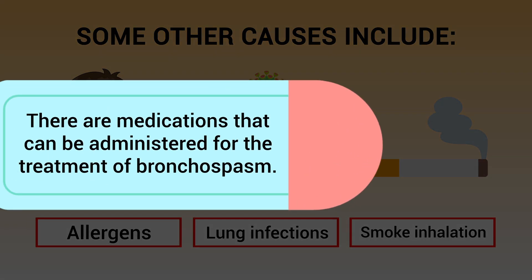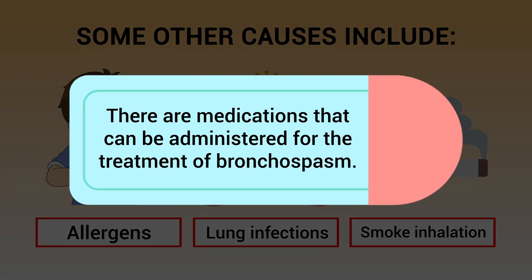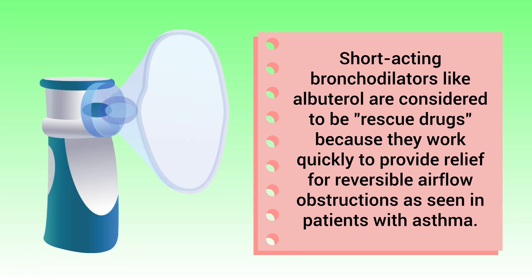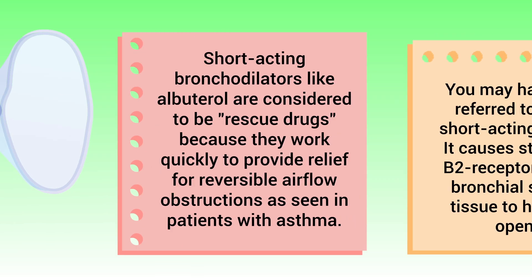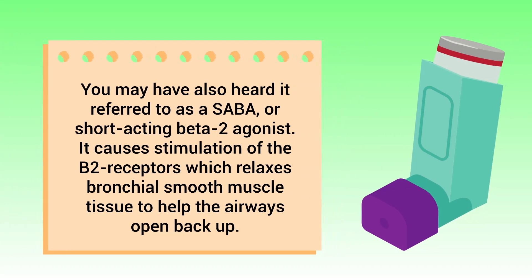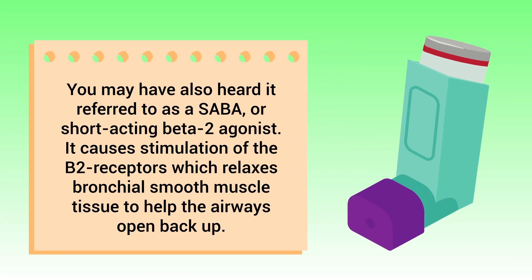There are medications that can be administered for the treatment of bronchospasm. Short-acting bronchodilators like albuterol are considered to be rescue drugs because they work quickly to provide relief for reversible airflow obstructions, as seen in patients with asthma. You may have also heard it referred to as a SABA, or short-acting beta-2 agonist.